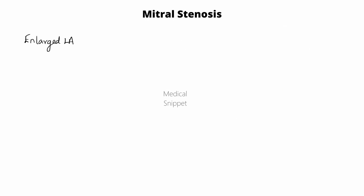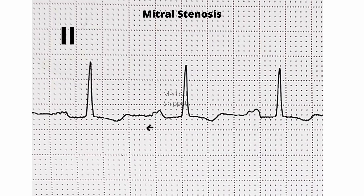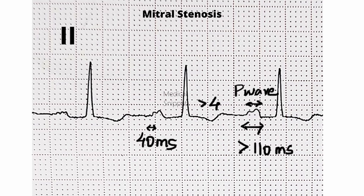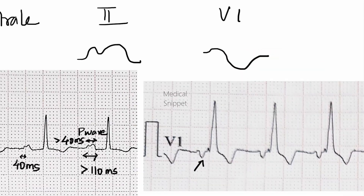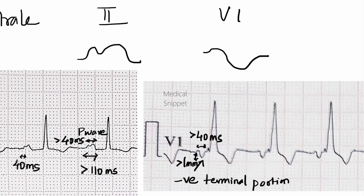The enlarged left atrium causes P mitrale in ECG — that is, a broad and bifid P wave in lead 2. One small box in ECG is 40 ms in duration. Broad P wave means P wave duration more than 110 ms, and bifid P wave means the duration between two peaks is more than 40 ms. In V1, it is seen as a biphasic P wave with a negative terminal portion more than 40 ms in duration and more than 1 mm deep.